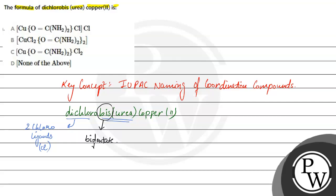Bis ka matlab hota hai two. Bis ka matlab kya hota hai, two. Aur bidentate kya hota hai? Bidentate for ligands hota hai, ligands which have more than one binding site.